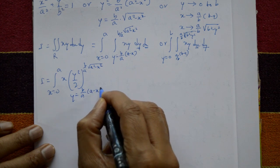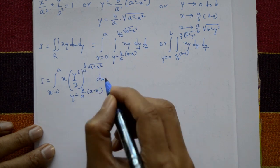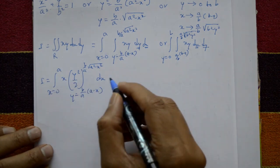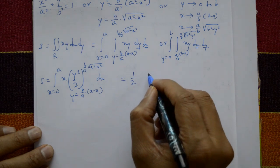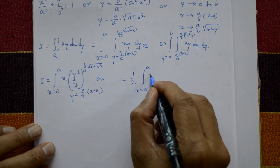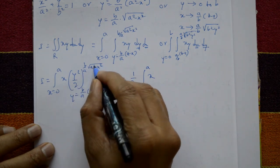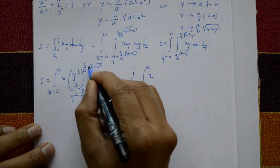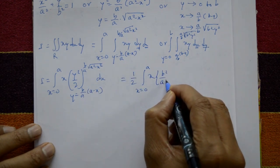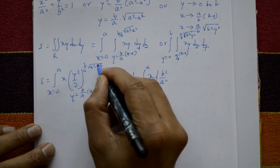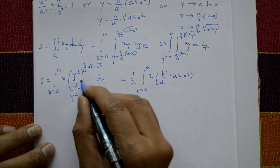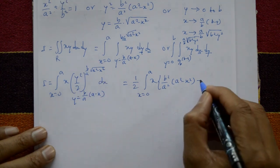Taking 1/2 outside, I = (1/2) ∫₀ᵃ x · [y²] from lower to upper limit dx. Substituting the upper limit: y = b/a·√(a²−x²), so y² = b²/a²·(a²−x²). Substituting the lower limit: y = b/a·(a−x), so y² = b²/a²·(a−x)².